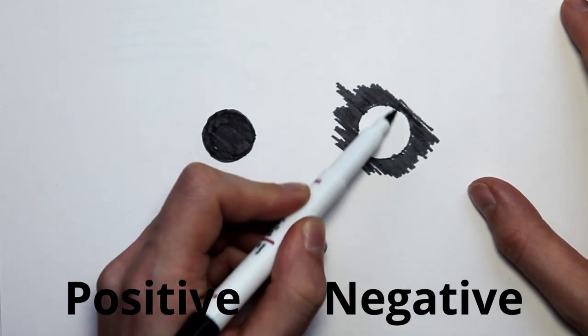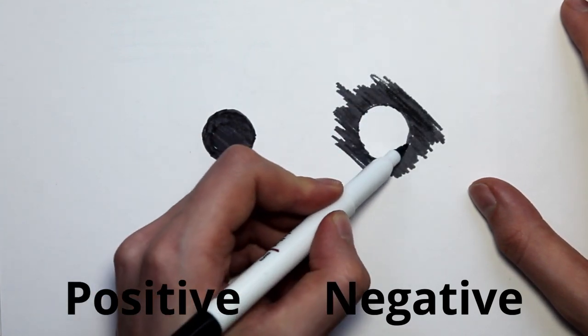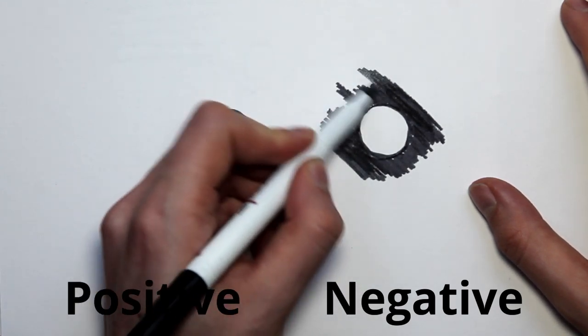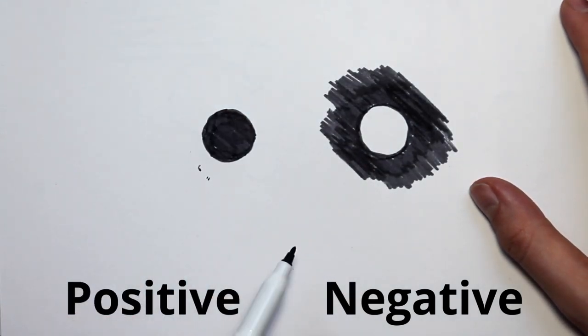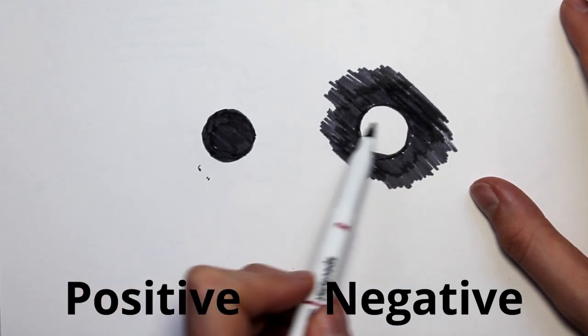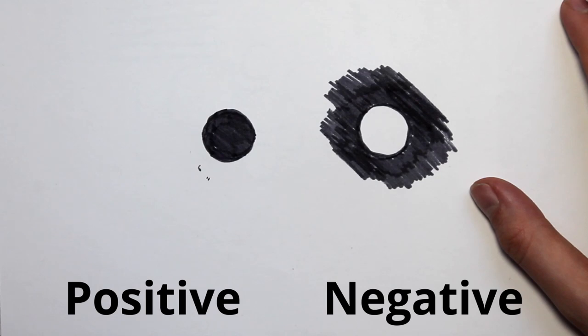The relationship between positive and negative shapes helps the brain of the viewer—the person looking at an artwork—understand what they are seeing. Our brains are even capable of making sense of quite complex relationships between these positive and negative shapes.